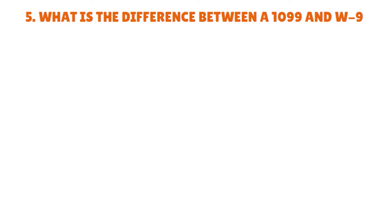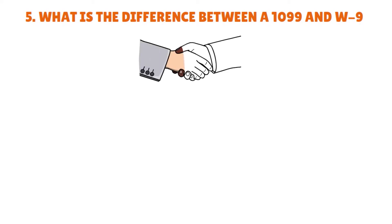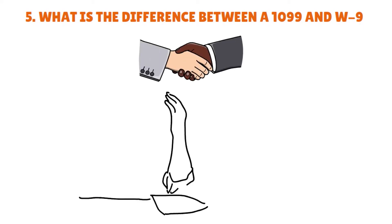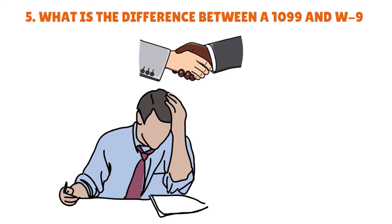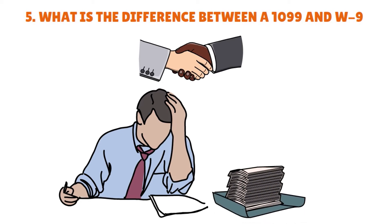The 1099 and W-9 forms go hand in hand. Independent contractors fill out the W-9 to confirm their tax responsibilities and provide information to their employers. In turn, employers use a contractor's W-9 to complete a 1099 detailing the worker's income. As of the date of this show, there are 18 different 1099 forms, each relating to the nature of the income — freelance or contract income, real estate sales earnings, debt cancellation, pension contributions, and more.